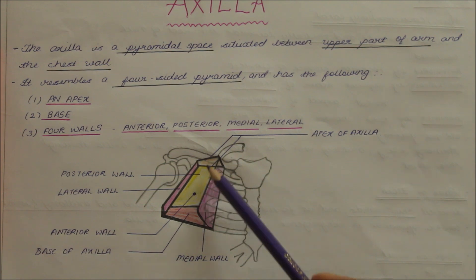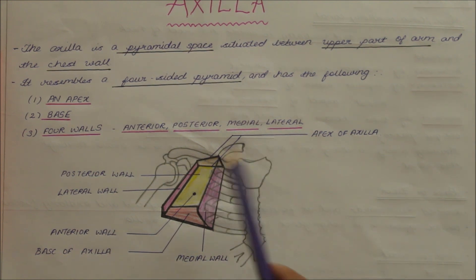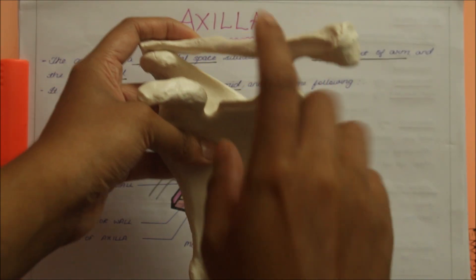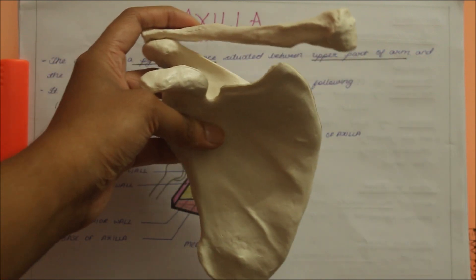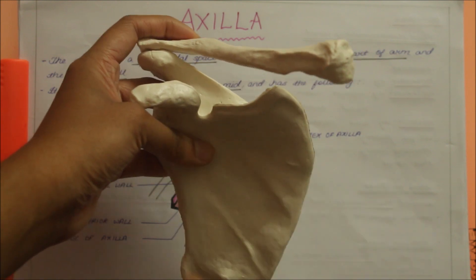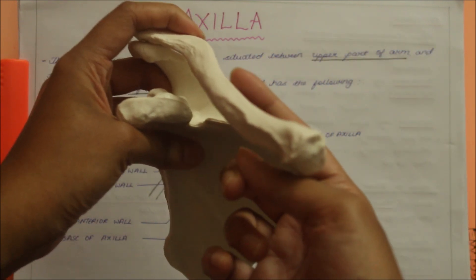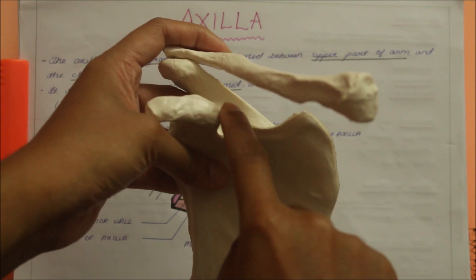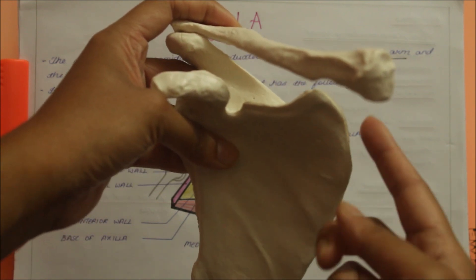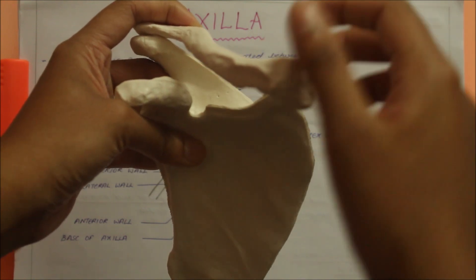Now let us look at the boundaries in detail. The apex, or the cervico-axillary canal, is directed upwards and medially towards the body. Using a specimen of the right scapula and the right clavicle in anterior view, the apex is bounded anteriorly by the posterior surface of the clavicle, posteriorly by the upper border of the scapula and the medial aspect of the coracoid process, and medially by the outer border of the first rib. The oblique passage is called the cervico-axillary canal.